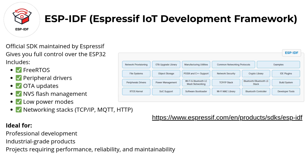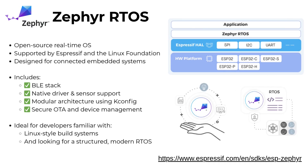ESP-IDF is the Espressif official and most complete development framework. It gives you full control over the ESP32, including direct access to FreeRTOS, peripheral drivers, OTA updates, flash memory management, low power modes, and network stacks like TCP/IP, MQTT and HTTP. It's ideal for professional development, industrial-grade projects, and when you need performance, reliability and security. Zephyr RTOS is an open-source real-time operating system from the Linux Foundation, supported by the Espressif team. It's designed for connected embedded systems and includes BLE stacks, native support for drivers and sensors, modular architecture with Kconfig, and secure OTA and device management. Zephyr is a great choice for developers who want a structured, modern RTOS and are more familiar with Linux-style build systems.